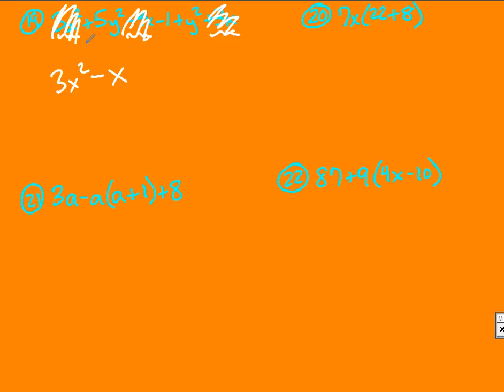Next, y squared. I have a plus y squared and a plus y squared. One's plus 5, one plus 1. So 5y squared plus 1y squared is 6y squared. And the only thing left is this minus 1 on the end.